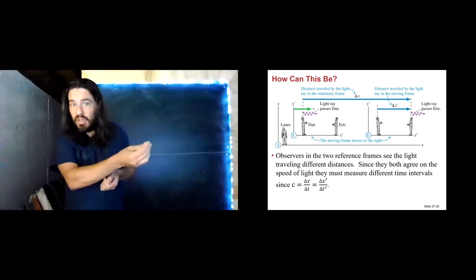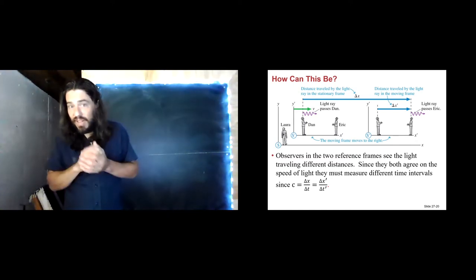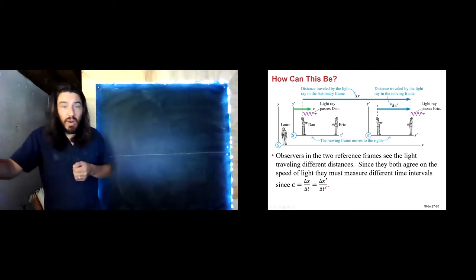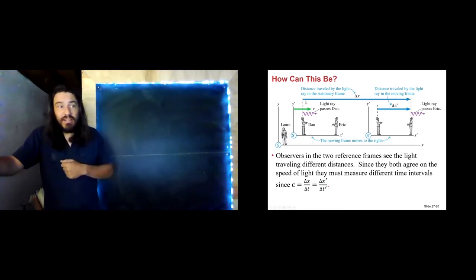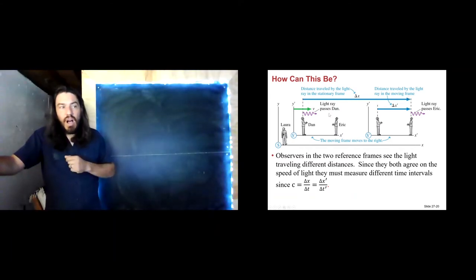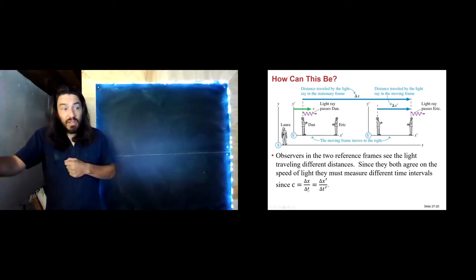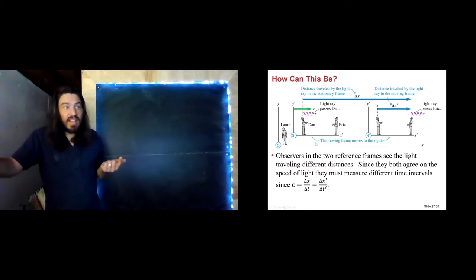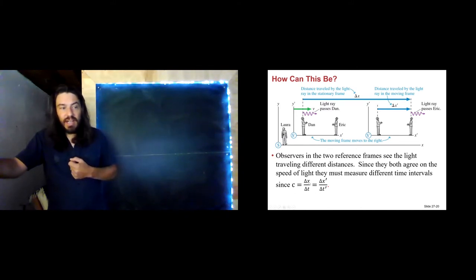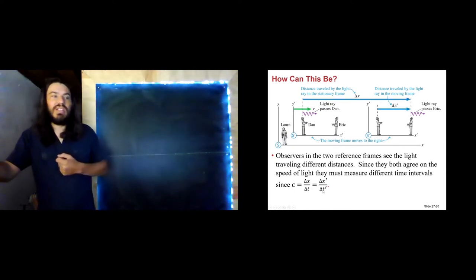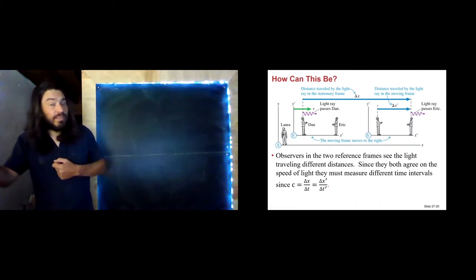If you believe that moving a piece of chalk 1.5 feet is valid, then you have to believe Dan when he says the light ray traveled delta X′, and we similarly need to believe Laura when she says it traveled delta X. All three observers agree that delta X over delta T equals the speed of light. Since delta X′ is different, delta T′ must be different as well. And so now we've stumbled onto what we call time dilation.